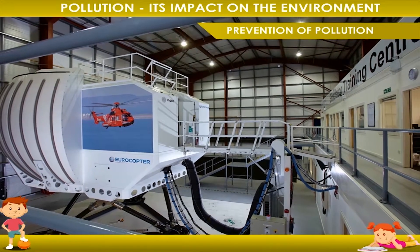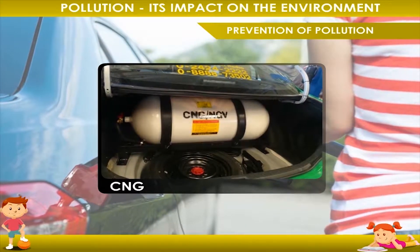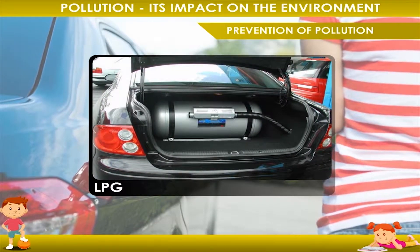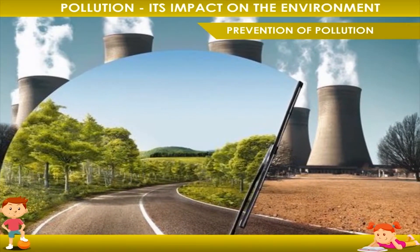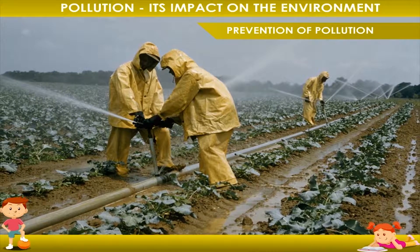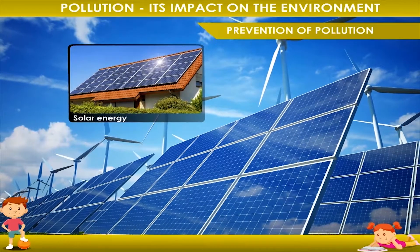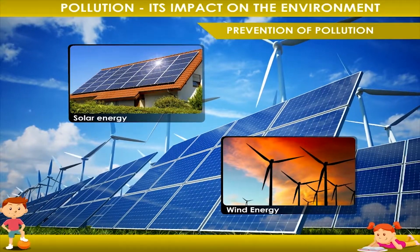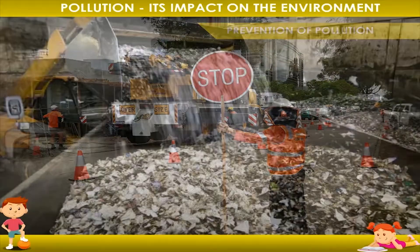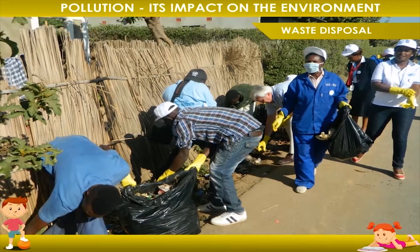Soundproof machines should be used in factories. We should use CNG (Compressed Natural Gas) and LPG (Liquefied Petroleum Gas) as fuel for vehicles, as this causes less air pollution. We should make farmers aware so they use fewer fertilizers and pesticides. Using more solar energy and wind energy will help reduce the use of fuel and reduce air pollution. Proper traffic management and proper disposal of waste are necessary to keep our environment clean.